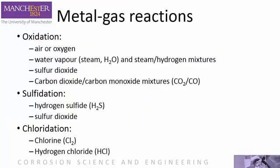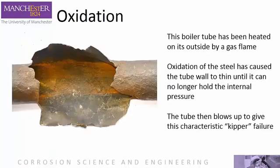So far, we have focused on corrosion in ambient conditions, close to normal temperatures and pressures. However, at higher temperatures, liquid water is no longer available, and the corrosion damage process involves direct reaction between the metal and a reactive gas, such as oxygen, steam, carbon monoxide, sulphur dioxide, etc. Molten salt corrosion can also occur when solid deposits such as salt melt at very high temperatures, generally more than 900 to 1000 degrees Celsius. Most examples of failure due to gas-metal reaction or high temperature oxidation occur in engines and boilers. Here, a boiler steam tube heated by a gas flame on its outside has oxidised, losing metal thickness in the process. Eventually the remaining metal is too thin to support the internal steam pressure, and the tube fails explosively in this characteristic failure pattern.